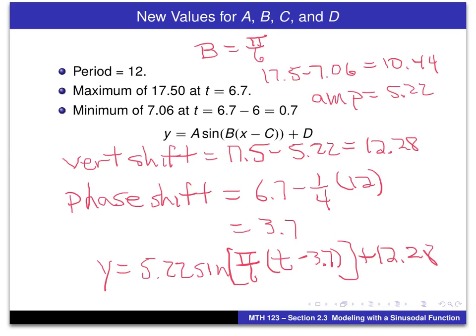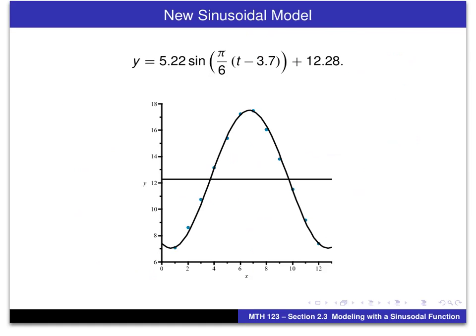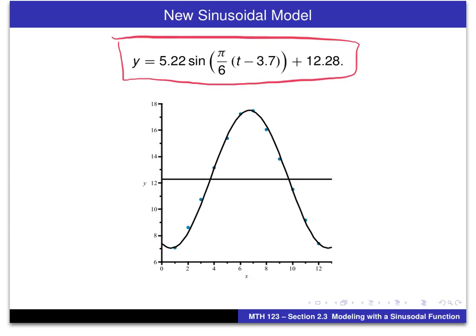Again, if we've already got the data entered into our calculator, we can sketch the graph of this equation. We should get something that looks like that, and you can see that is quite a good fit of the data — not a perfect fit, but a very good fit. We can use this equation to model the number of hours of daylight in Edinburgh, Scotland. In the next screencast, we're going to look at how to compare this to what we would get using a sine regression function on something like the TI-84 calculator. I will see you at that next screencast.